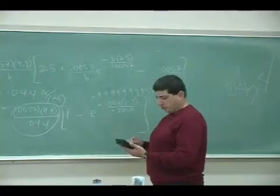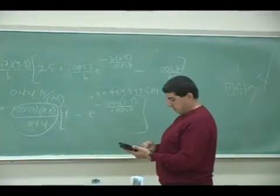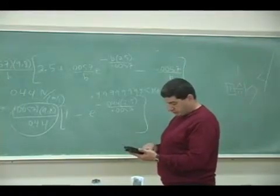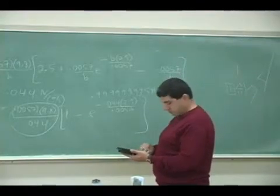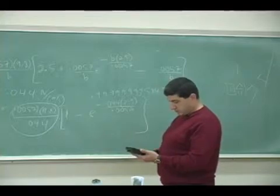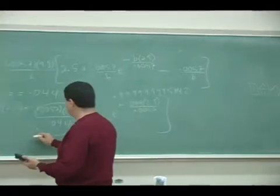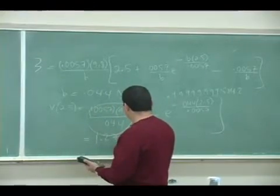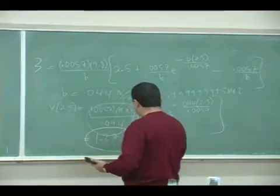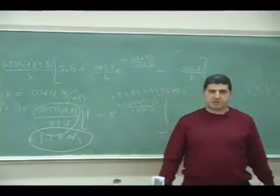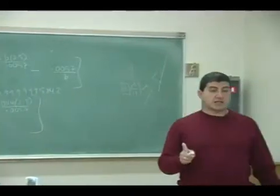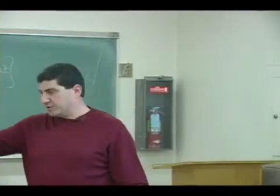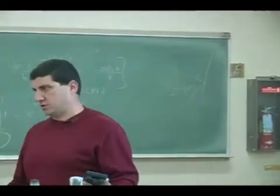So this is almost 0.9, and then now I multiply this by 0.0057 times 9.8 divided by 1.27. So 1.27 meters per second. So in that case, the terminal velocity is 1.27. So by the time it's reached the ground, it's already reached the terminal velocity.